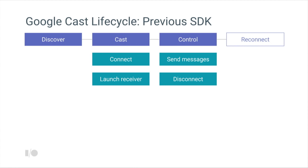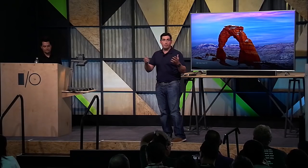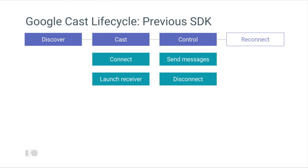The Cast lifecycle is about four major steps: discovery — figuring out if you have a Chromecast or Android TV on your network; connecting to it; launching what's called a receiver app; and then controlling, because in the Cast model all video and streaming goes directly from the cloud to the device, and you send small messages back and forth.